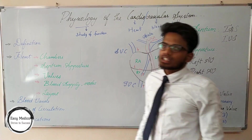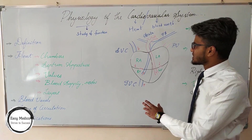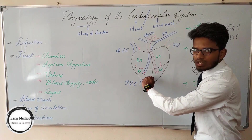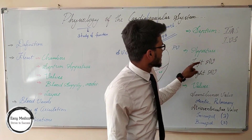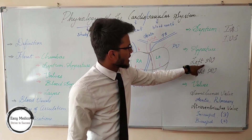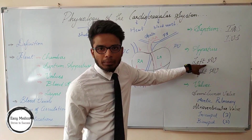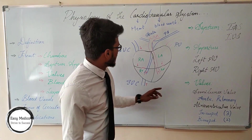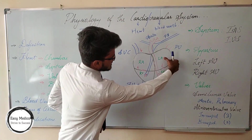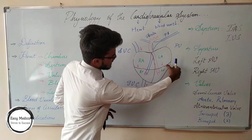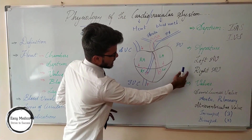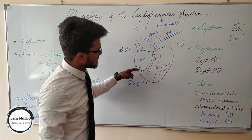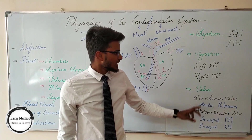Aperture is the division which divides the upper part of the heart and the lower part of the heart. It includes the Left Atrioventricular Aperture and the Right Atrioventricular Aperture. The Left Atrioventricular Aperture divides the left atrium and left ventricle. The Right Atrioventricular Aperture divides the right atrium and the right ventricle.